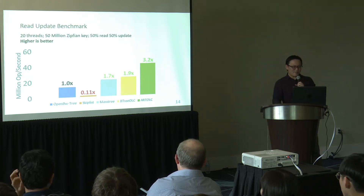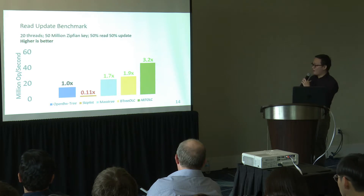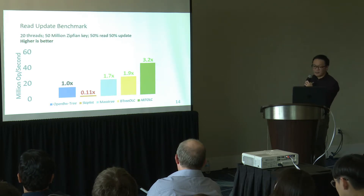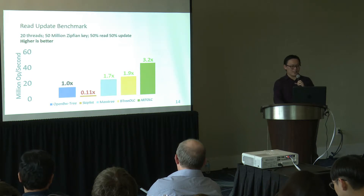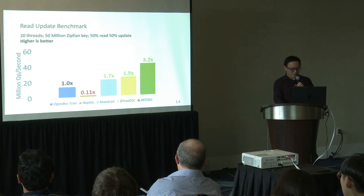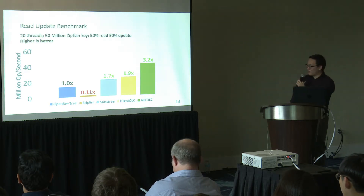In the read-update benchmark (YCSB-A), ART OLC is still the fastest, 3.2 times faster than OpenBWTree, followed by B+ Tree then Masstree. The skip list is again the slowest data structure in this workload.